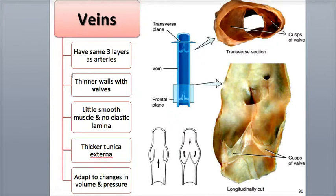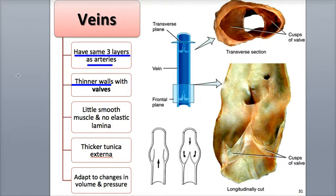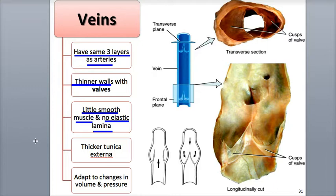Veins are vessels with thin walls, even though some can have large diameters up to several centimeters, like the superior and inferior vena cava. Veins have the same three layers as the arteries, but their layers have different thicknesses relative to the diameter of the vessel. Veins have a thinner tunica interna and tunica media, with few smooth muscle cells and elastic fibers.